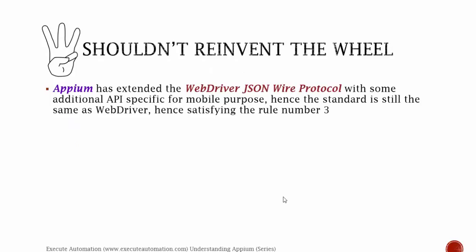The third philosophy is you shouldn't reinvent the wheel. Appium has extended WebDriver's JSON wire protocol with some additional APIs specific for mobile purposes. Hence the standard is still the same as WebDriver, satisfying rule number three. We'll talk more about WebDriver's JSON wire protocol in the third video of this series.